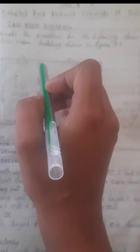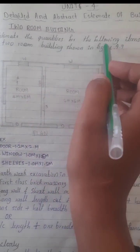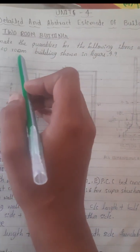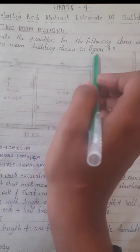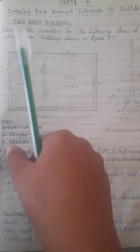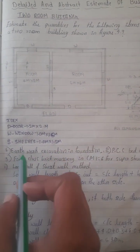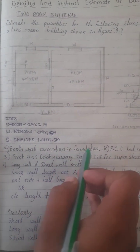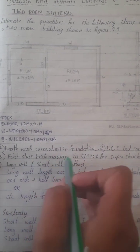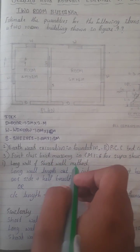There are two-room buildings, and we have questions. We have to estimate the quantity for the following items of work for a two-room building: earthwork excavation foundation, PCC bed concrete, first class brick masonry superstructure. We have to estimate the quantity for long wall and short wall.